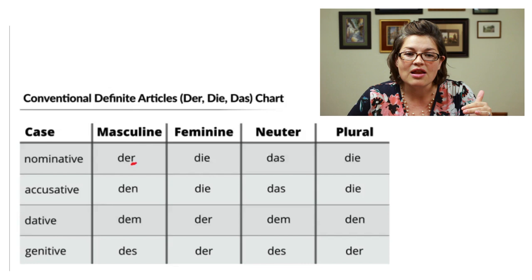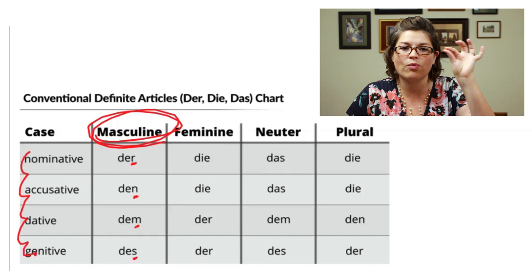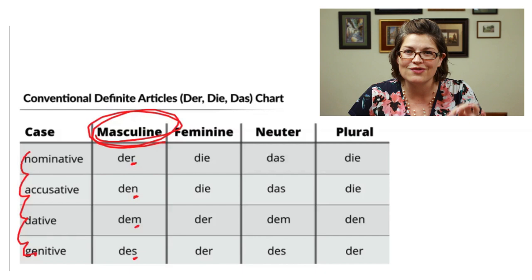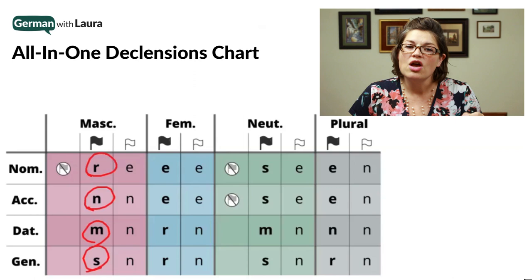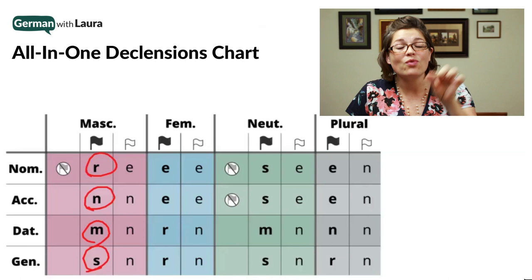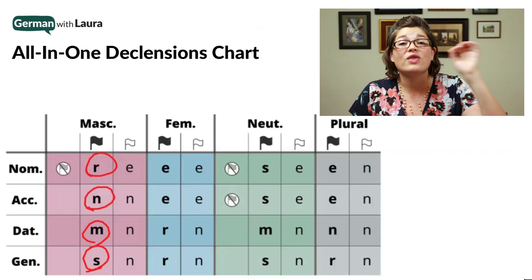RNMS — these are the declensions for masculine nouns in the four different cases. Remember that. You see RNMS at the end of these four different ways of saying 'the' in German. Then look at the all-in-one declensions chart again, and you see RNMS. The all-in-one declensions chart gives you just the declensions themselves, and I will teach you in this video and the next one how you can know which of these declensions to put onto which words so that you can nail declensions 100% of the time.